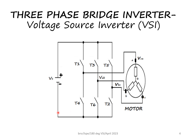In 180-degree mode of operation, at any point of time three devices will be on, following a particular sequence. If two switches from the upper group are conducting, one from the lower group will conduct. If two lower group switches are conducting, one from the upper group will conduct. One important point: switches in the same leg must not be turned on at the same time, as that would create a direct short circuit to the source.